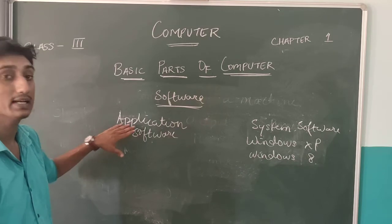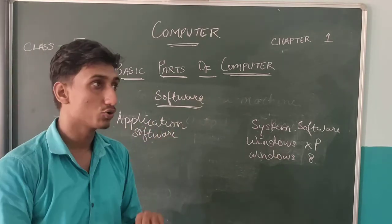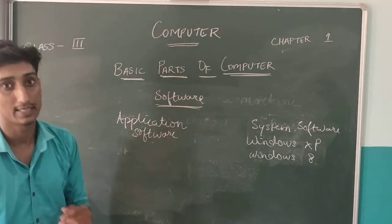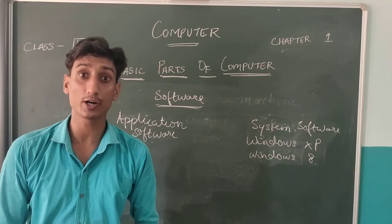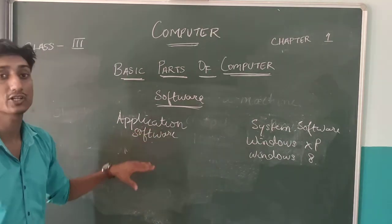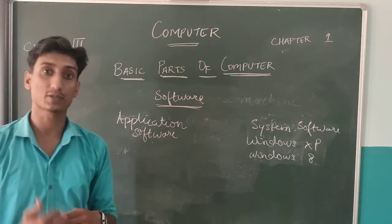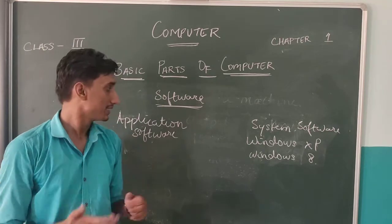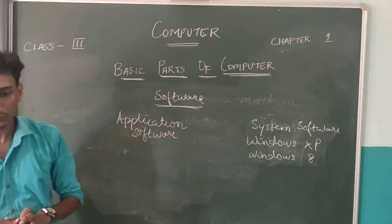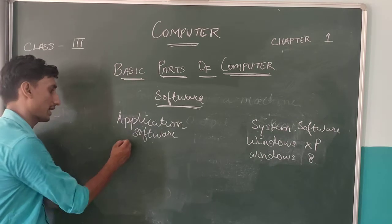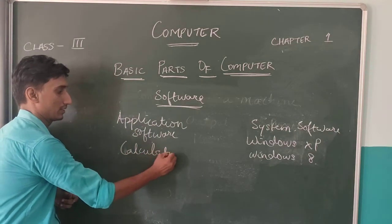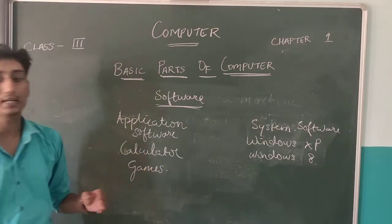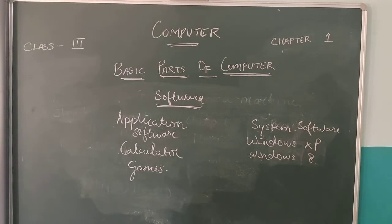Application software refers to programs you use on the system software to perform different jobs, such as calculator, paint, and Word. Browsers such as Chrome, Mozilla Firefox, and Opera are also applications. Games are also different types of applications.